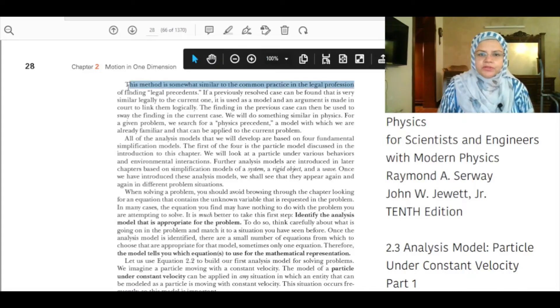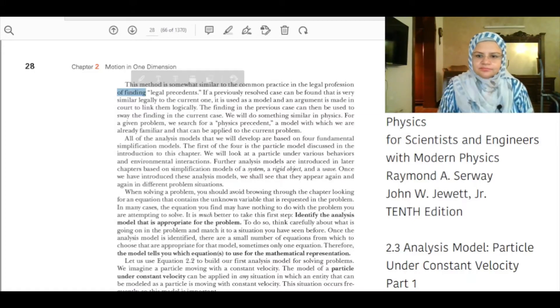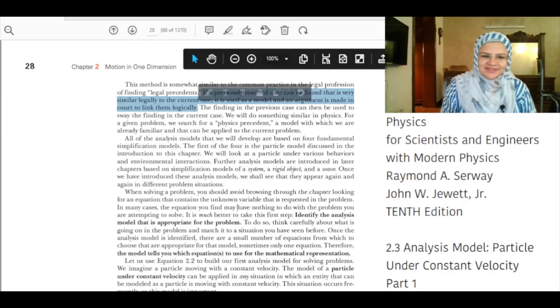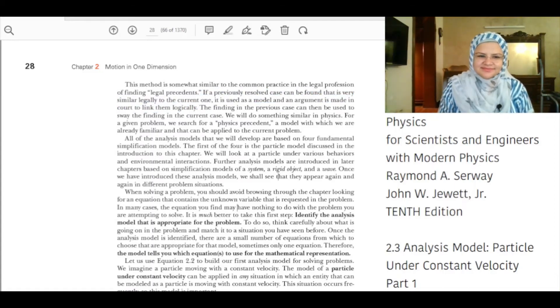This method is somewhat similar to the common practice in the legal profession of finding legal precedence. If a previously resolved case can be found that is very similar legally to the current one, it is used as a model, and an argument is made in court to link them logically. The finding in the previous case can then be used to sway the finding in the current case.